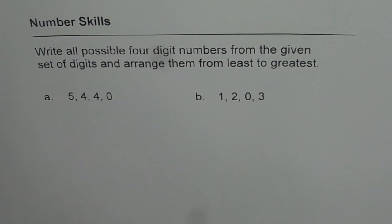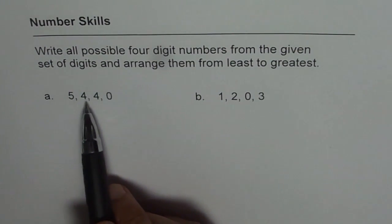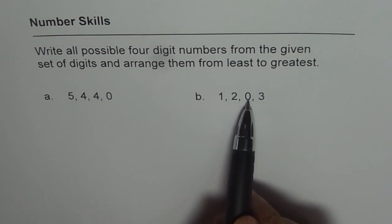Number skills. Write all possible four digit numbers from the given set of digits and arrange them from least to greatest. So we have two sets of digits here. First one is 5440. Second one is 1203.